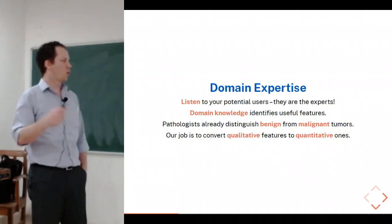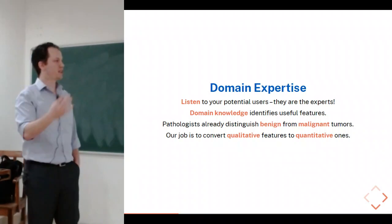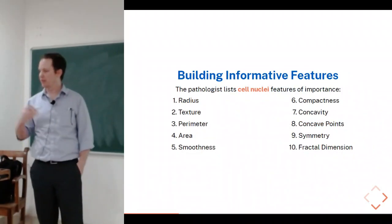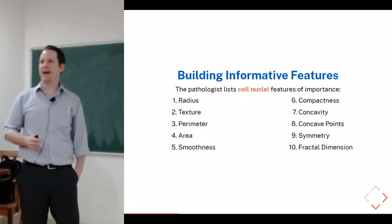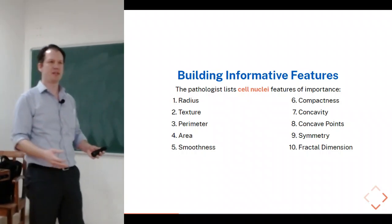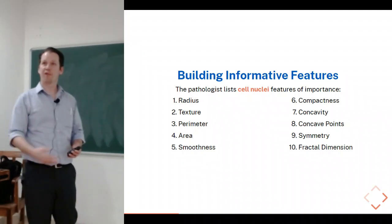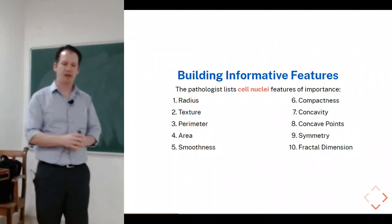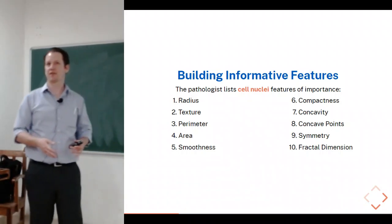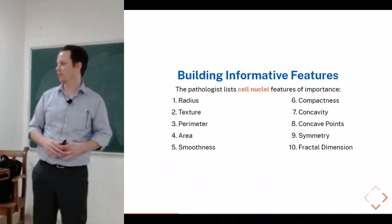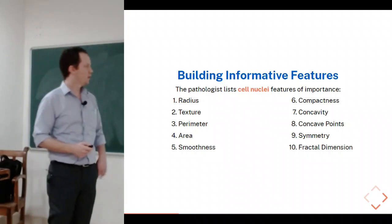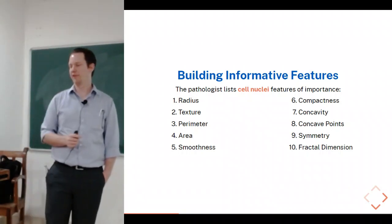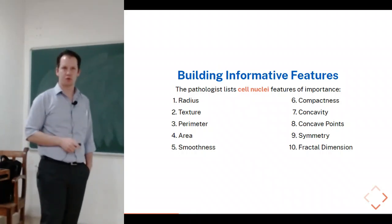Pathologists already distinguish benign from malignant tumors, making them an important source of data to drive your feature extraction. Our job is really to convert qualitative features — like 'the cells don't look right' — to quantitative features that you can measure or teach the computer to measure. In the best case, the pathologist hands you a list of features. Normally you sit down with them for a day or two and watch them look at slides, which is extremely valuable — similar to sitting with an investor to understand how they evaluate stocks.